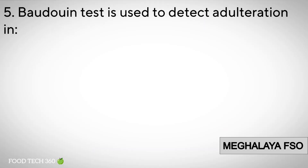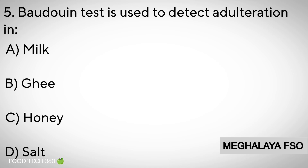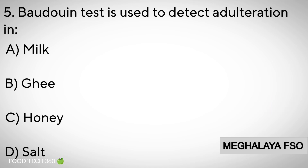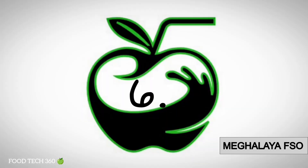Question number five. The Baudouin test is used to detect adulteration in: A. Milk, B. Ghee, C. Honey, D. Salt. Correct answer: B. Ghee.